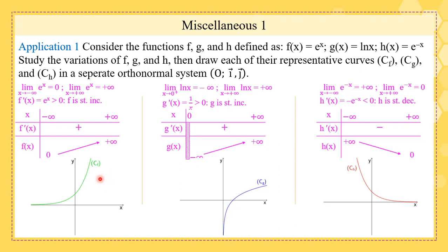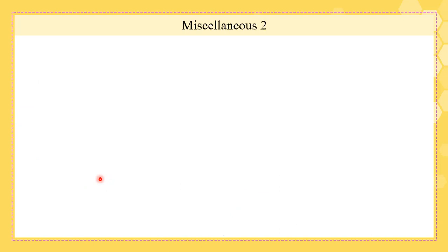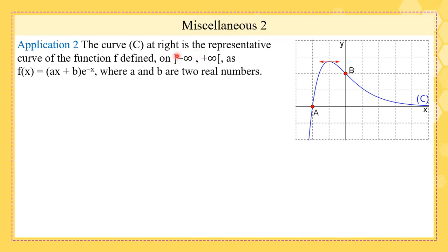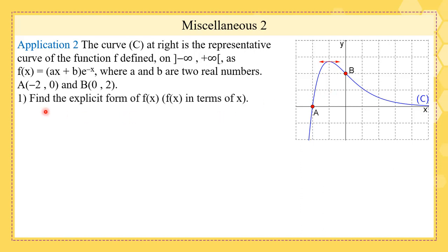Now for miscellaneous problem two: the curve C is the representative curve of a function f defined on (−∞, +∞) as f(x) = (ax + b)e⁻ˣ, where a and b are two real numbers. Point A has coordinates (−2, 0) and point B has coordinates (0, 2). The first part asks to find the explicit form of f(x), meaning we need to find a and b. Try to do it alone.